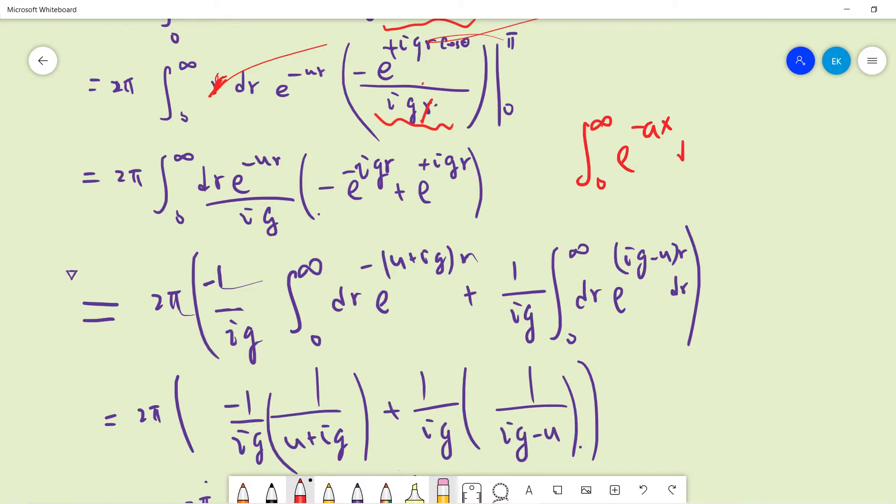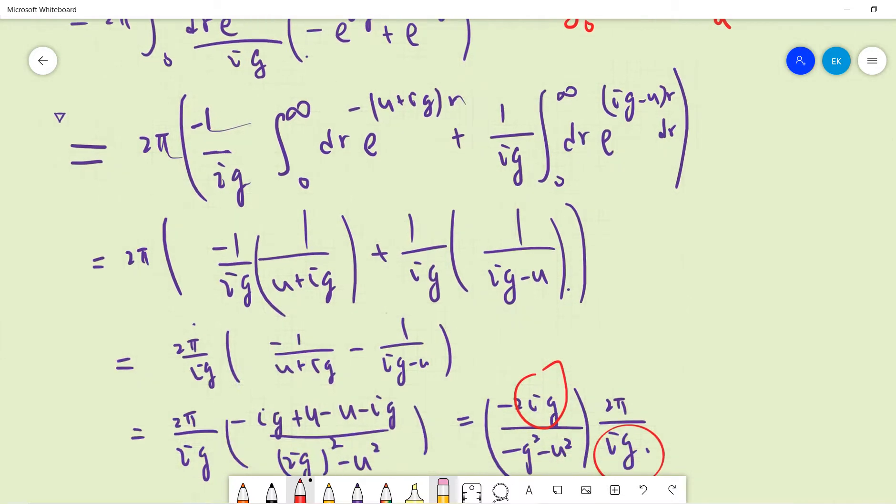Remember there's an integration formula. This minus μ plus iqr will give us this, and this iq minus μr will give us this. So finally you get 2π times this expression. The final step is simple calculation: